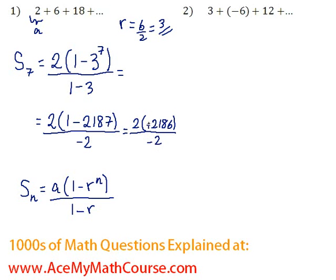Now negative and negative, they cancel out, become positive. The 2's are going to also cancel out, and the final answer is 2186.